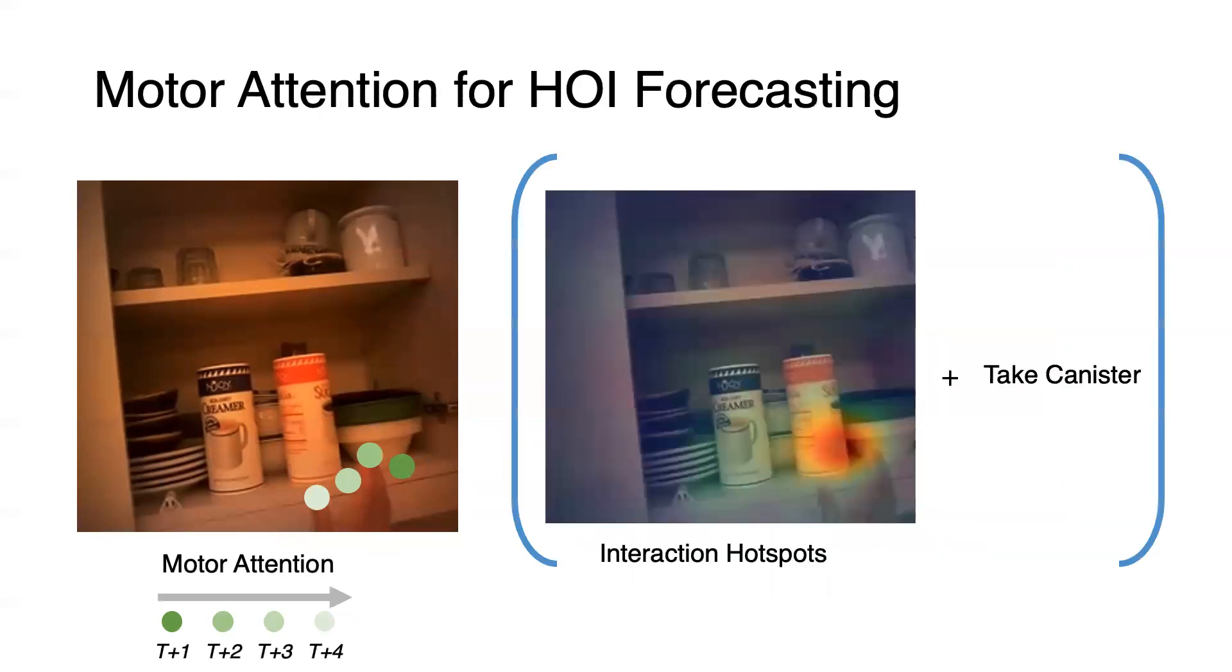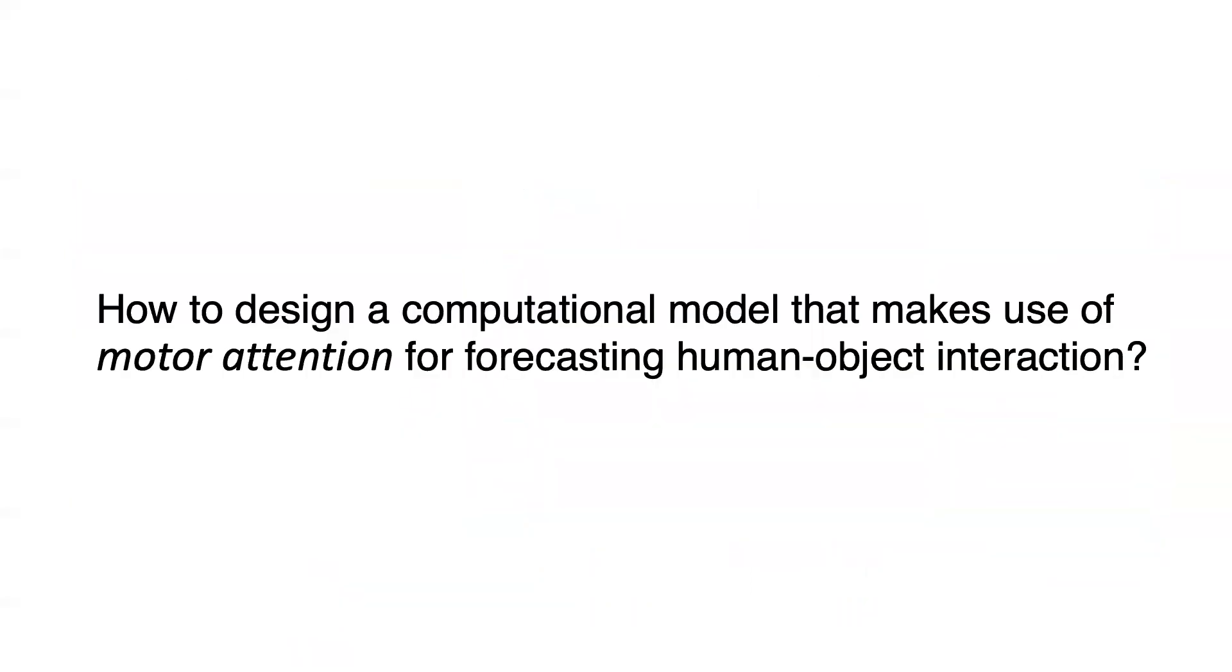Considering the same example, future hand trajectory implies which part of the object will be grasped and what is the future action. How can we design a joint model that uses motor attention for forecasting human-object interaction?